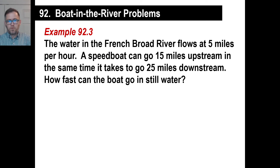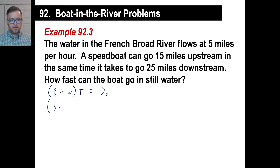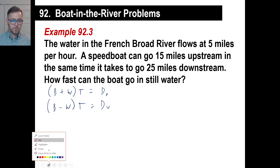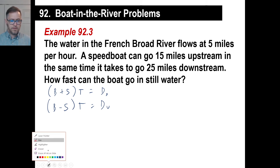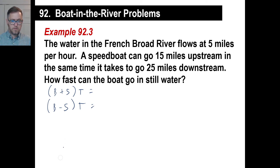The French Broad River flows at 5 miles per hour. A speedboat can go 15 miles upstream in the same time it takes to go 25 miles downstream. We know the water speed is 5, so we can substitute that in right away. Downstream distance is 25 miles, and upstream distance is 15 miles.